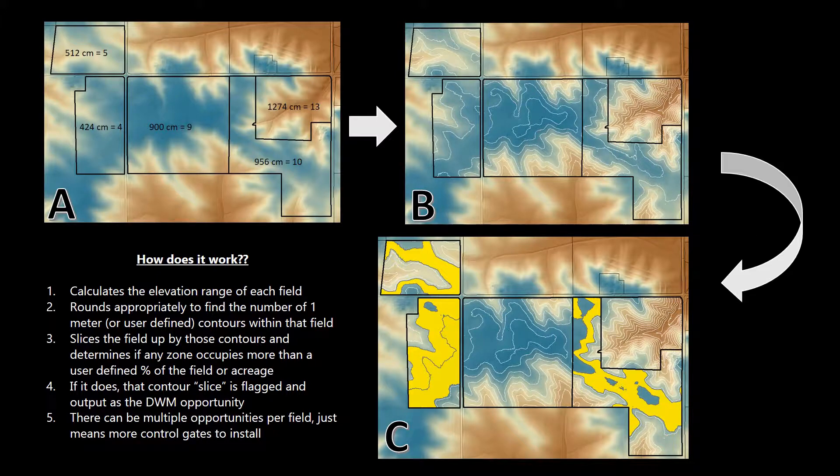So first off, the tool calculates the elevation range of each field, which can be shown in image A. That range is then rounded appropriately. And then the number of one meter contour intervals that can fit within that field is found, which can be shown also in image A by what it's equal to.